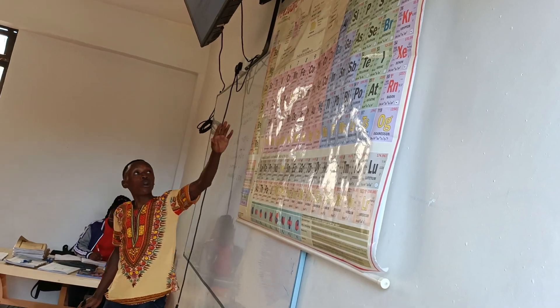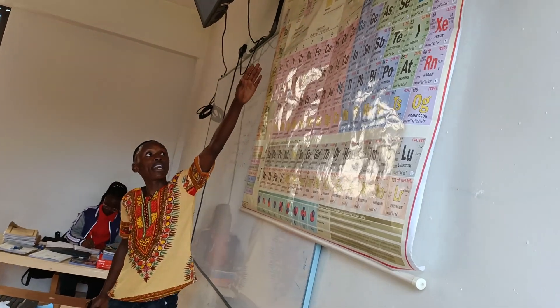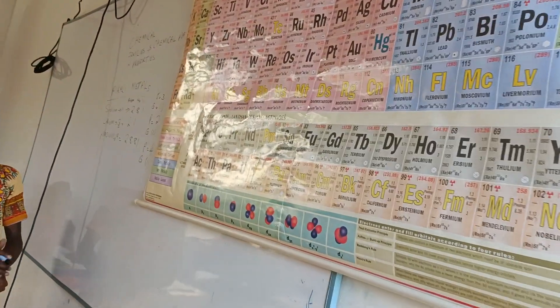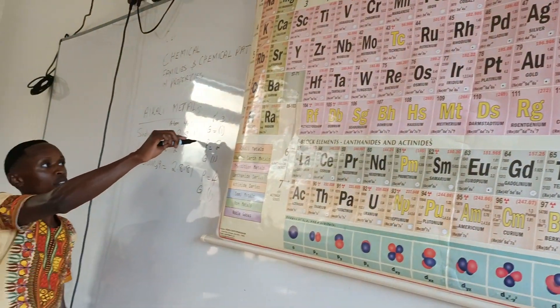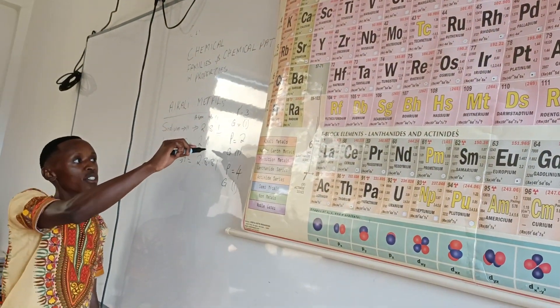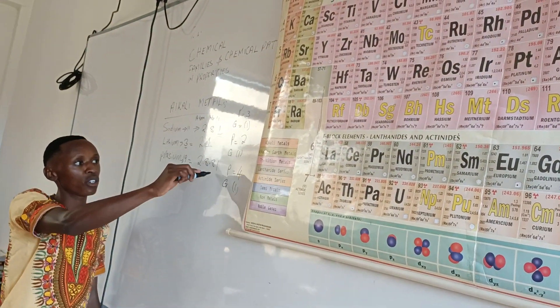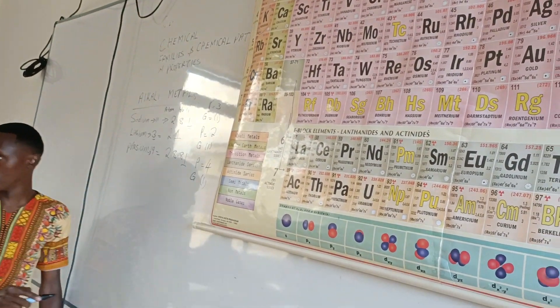And we refer to them as alkali metals. Where they appear here, they have one electron in their outermost energy level.